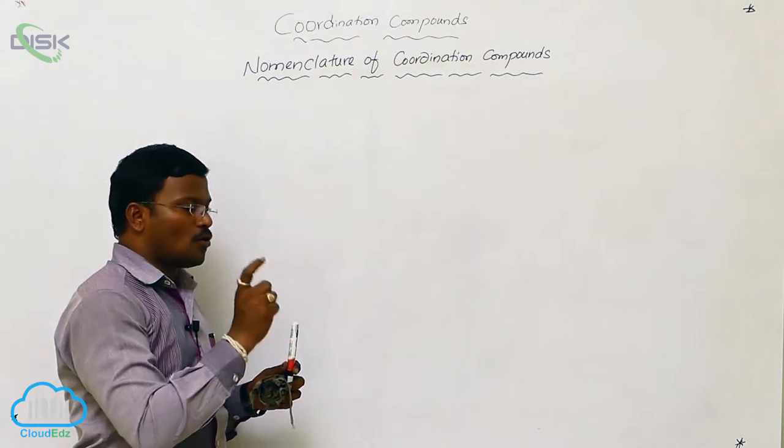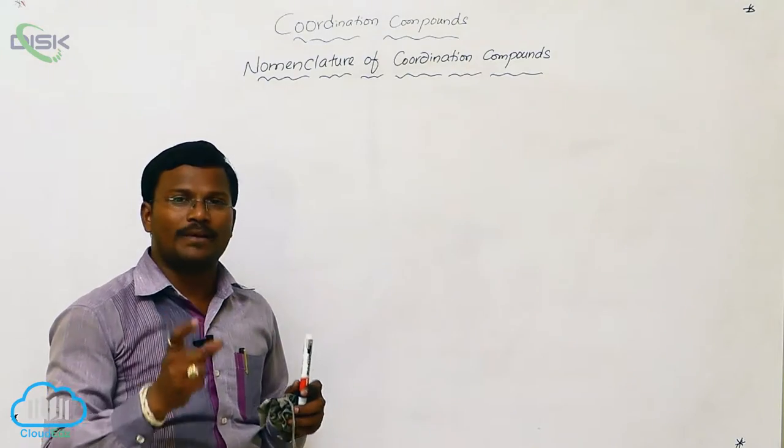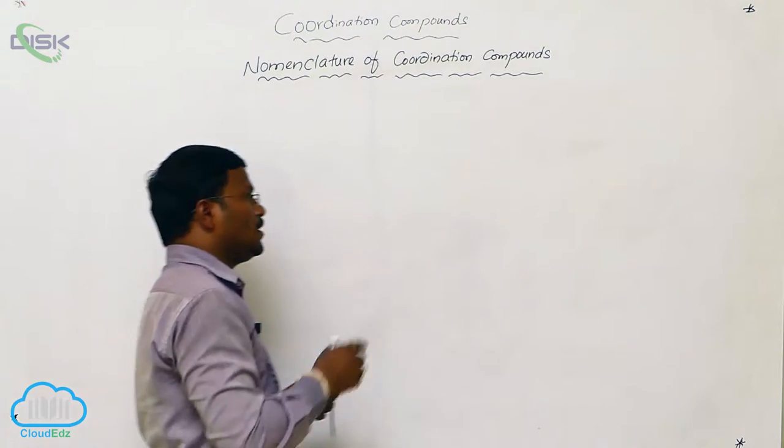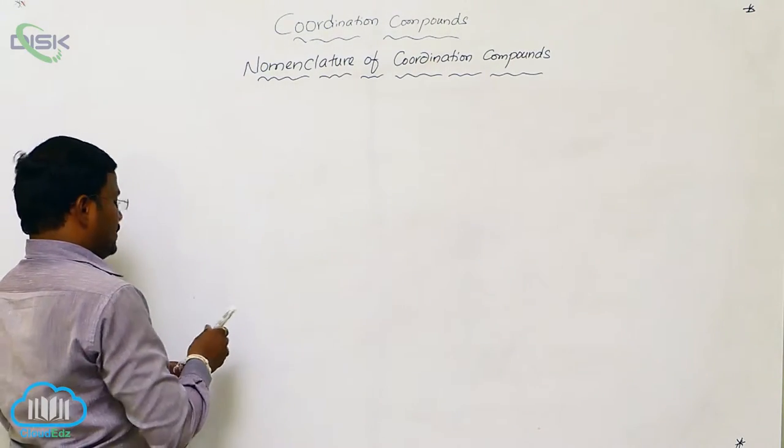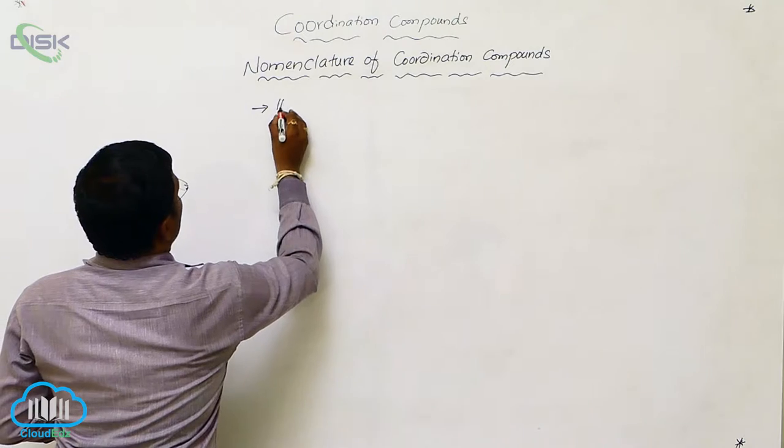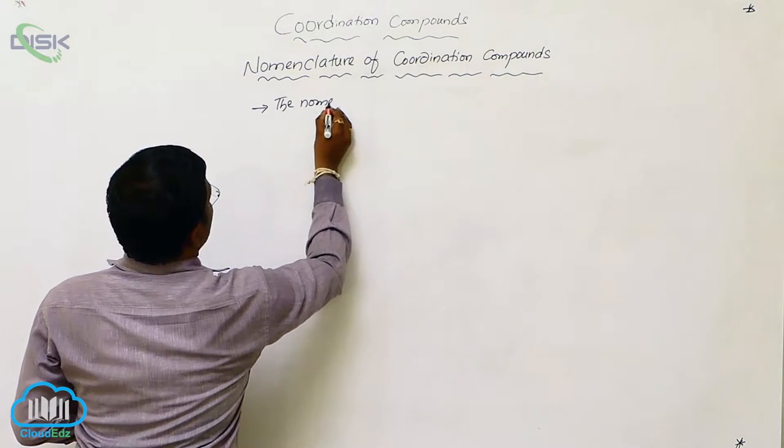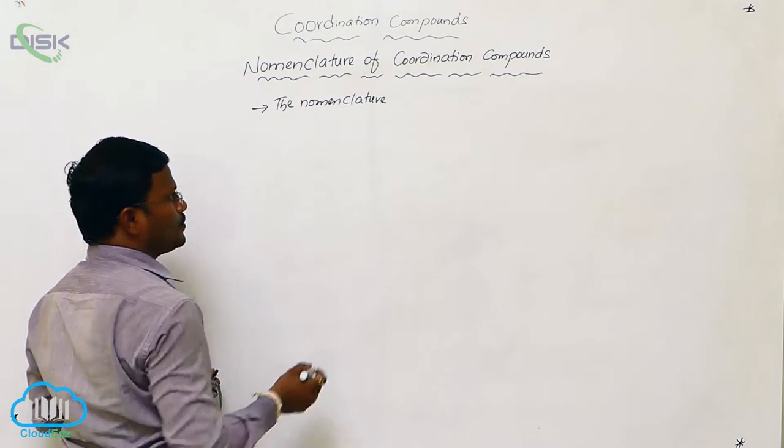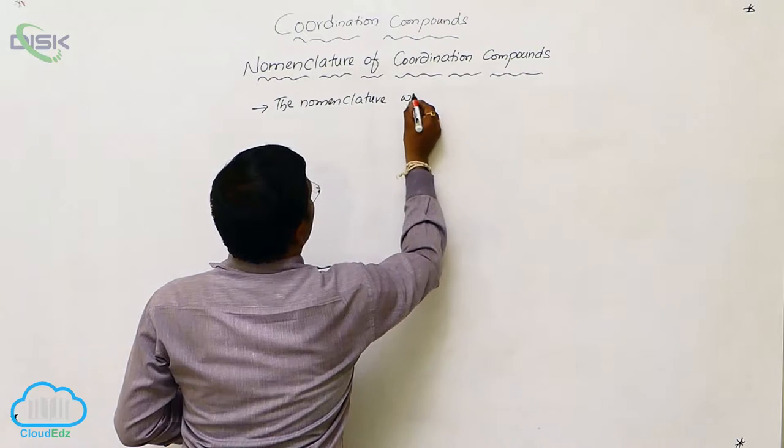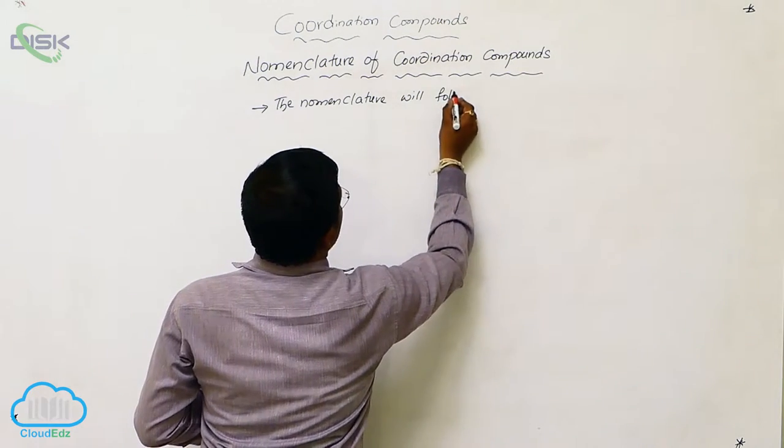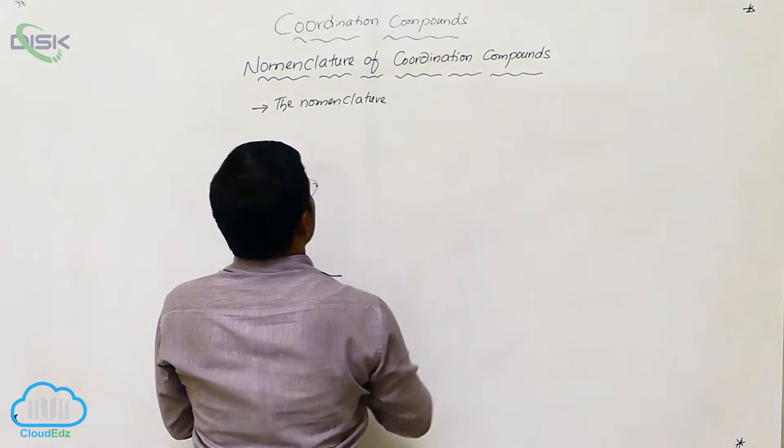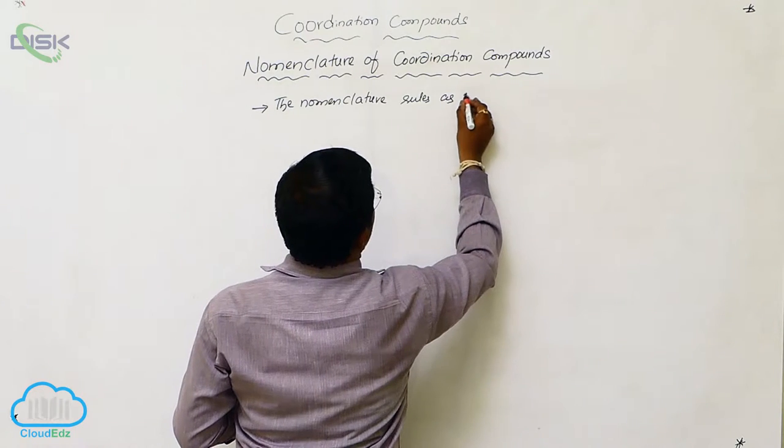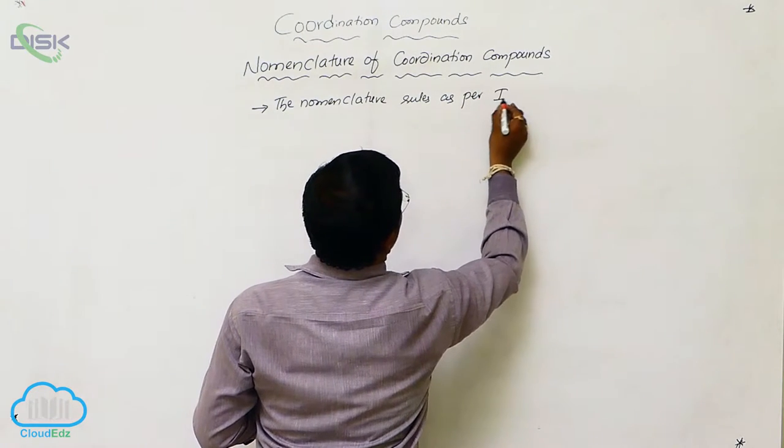The name of the coordination compound explains the geometry, general properties, and structural aspects of that compound. The nomenclature of coordination compounds follows the rules as per IUPAC.